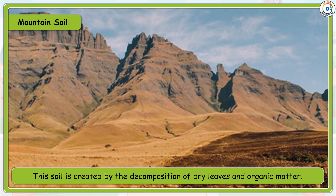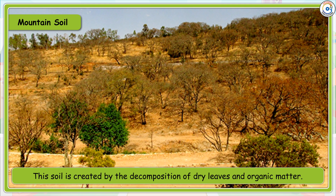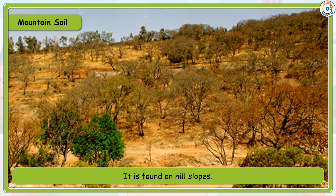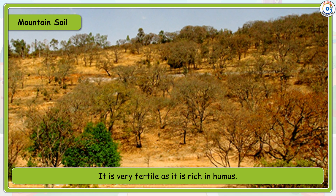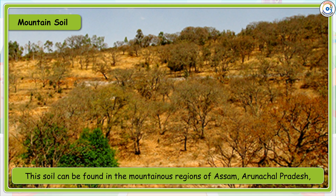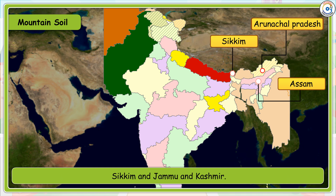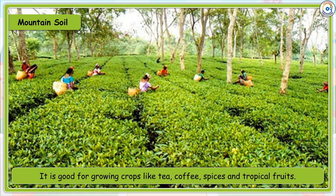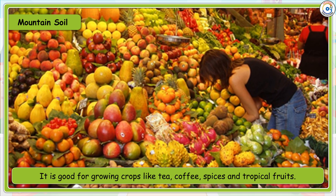Mountain soil is created by the decomposition of dry leaves and organic matter. It is found on hill slopes and is very fertile as it is rich in humus. This soil can be found in the mountainous regions of Assam, Arunachal Pradesh, Sikkim, and Jammu and Kashmir. It is good for growing crops like tea, coffee, spices, and tropical fruits.